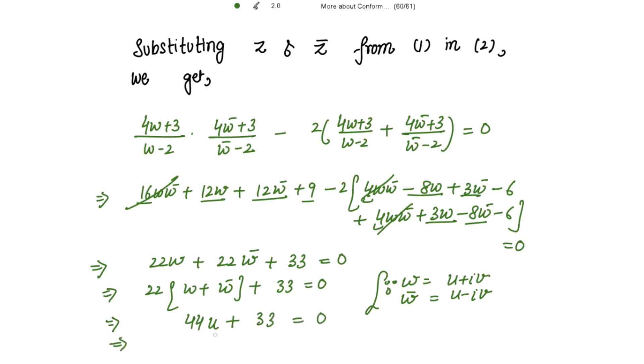And then it is 4u plus 3 equals 0, which is the required equation of the straight line. Please note that here a circle is transformed into a straight line, that is 4u plus 3, which is possible under a bilinear transformation, since we regard a straight line as a particular case of a circle. Thank you.